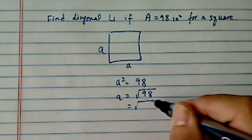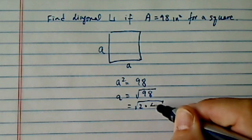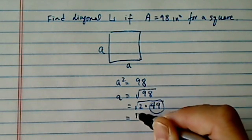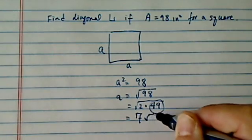Now, simplify the radical. We see there's a 2 in there, so 2 times 49. 49 is a perfect square, which is 7 radical 2.